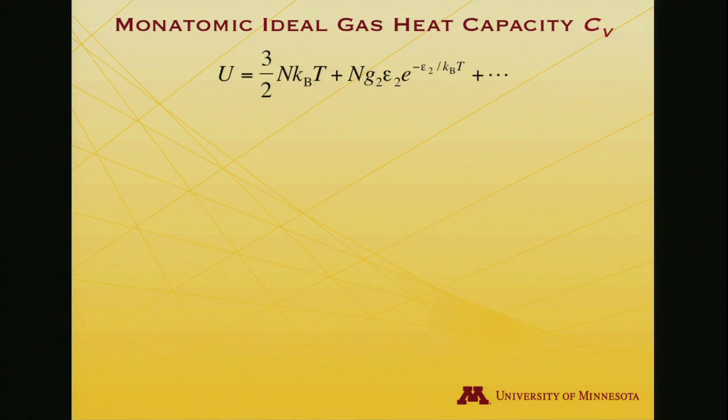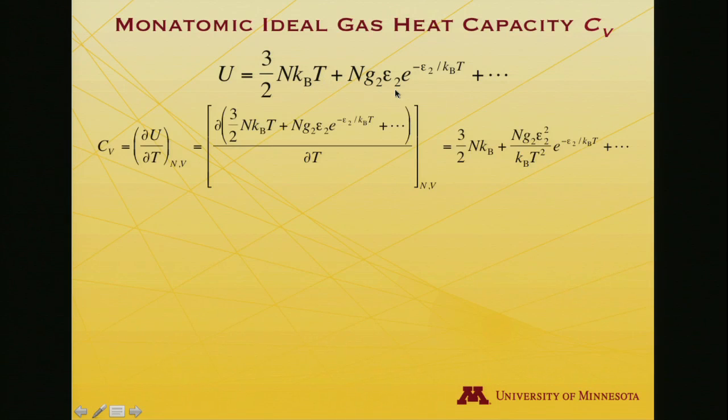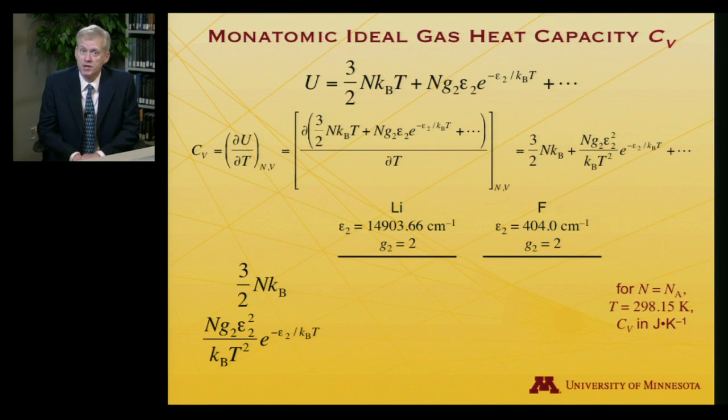Let me also look at the heat capacity for the monatomic ideal gas. If the internal energy is the expression we've been working with, I'll remind you the heat capacity at constant volume is the partial derivative of the internal energy with respect to temperature. I'm going to replace U with this expression. I'll do partial/partial T of this thing. This first term, that's a partial derivative anybody can love. Three halves NkT, you take the derivative with respect to T, you get three halves Nk. The next partial derivative is a little less friendly, but not too bad. We get N degeneracy excited state energy squared over kT² in the denominator. The exponential continues to appear.